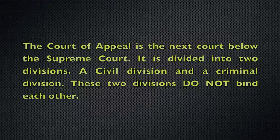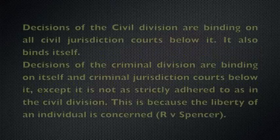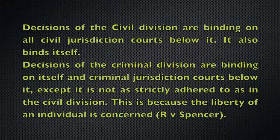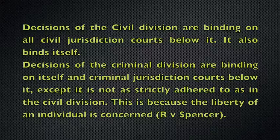The Court of Appeal is the next court below the Supreme Court. It's divided into two divisions: a civil division and a criminal division. These two divisions do not bind each other. Decisions of the civil division are binding on all civil jurisdiction courts below it, and it also binds itself. Decisions of the criminal division are binding on itself and criminal jurisdiction courts below it, except this is not as strictly adhered to as in the civil division, because the liberty of an individual is concerned.